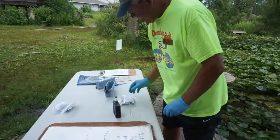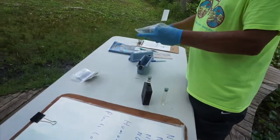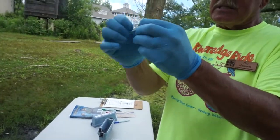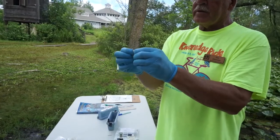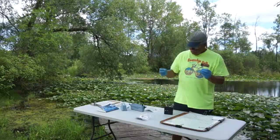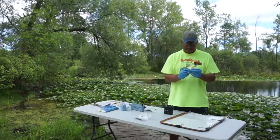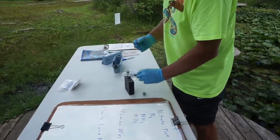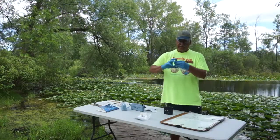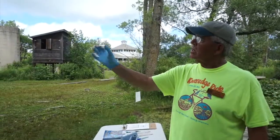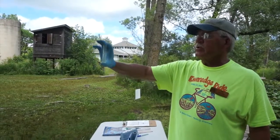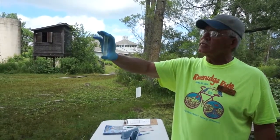Now we've shaken our sample for three minutes. We set it down and go to the Nitrover-3. Again, it's just a little packet like this. Give it one of these shakes so you get the stuff nice and loose inside. There's a little tear line — rip across the tear line. Put the wrapper in your pocket so it doesn't end up as garbage. Take the top off the test tube, dump your chemical in, and shake for 30 seconds.